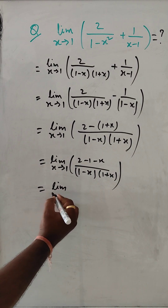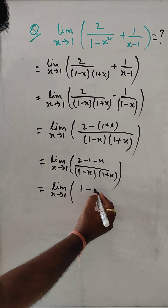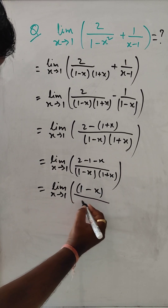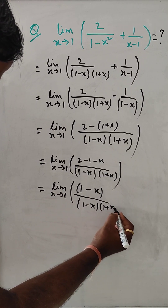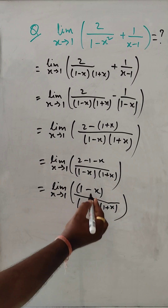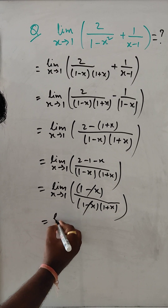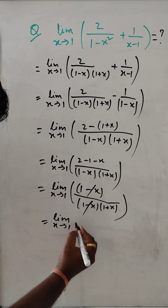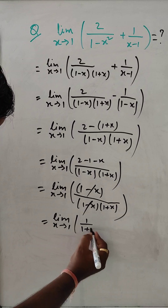Limit x tends to 1: we now have (1 minus x) in the numerator over (1 minus x)(1 plus x) in the denominator. The (1 minus x) terms cancel, leaving us with 1 over (1 plus x).